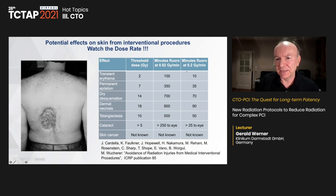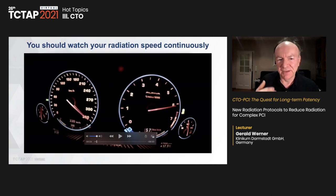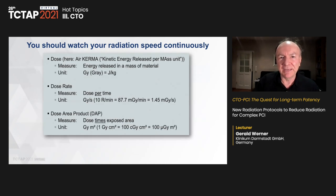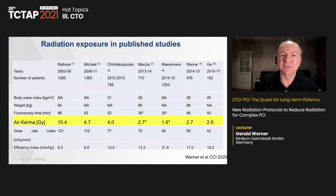Published studies show air kerma as a surrogate for radiation damage potential. A classic Toyohashi study showed 10 Gy at that time; American studies reduced this to 4–4.7 Gy; European studies even lower. Radiation exposure is related to CTO complexity — fluoroscopy time and air kerma increase with complexity, from around 2 Gy in easier cases to 3.5 Gy for complex ones. However, there is significant inter-operator variability. In data from the European CTO registry, operators working at the same fluoroscopy time can differ by nearly three-fold in radiation use.